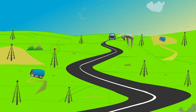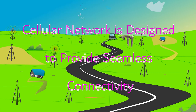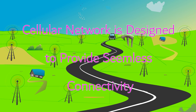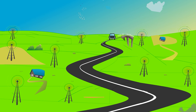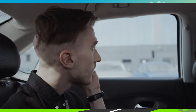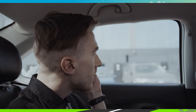Overall, the cellular network is designed to provide seamless connectivity to mobile devices as they move from one location to another. This is achieved through a complex system of cell towers and handover processes that work together to ensure that users can stay connected no matter where they go.